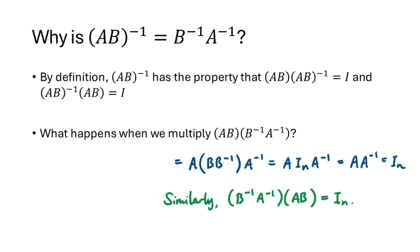And similarly, if we put the B inverse A inverse on the other side, we get B inverse A inverse times AB equals IN. So that's why the inverse of A times B is B inverse A inverse.